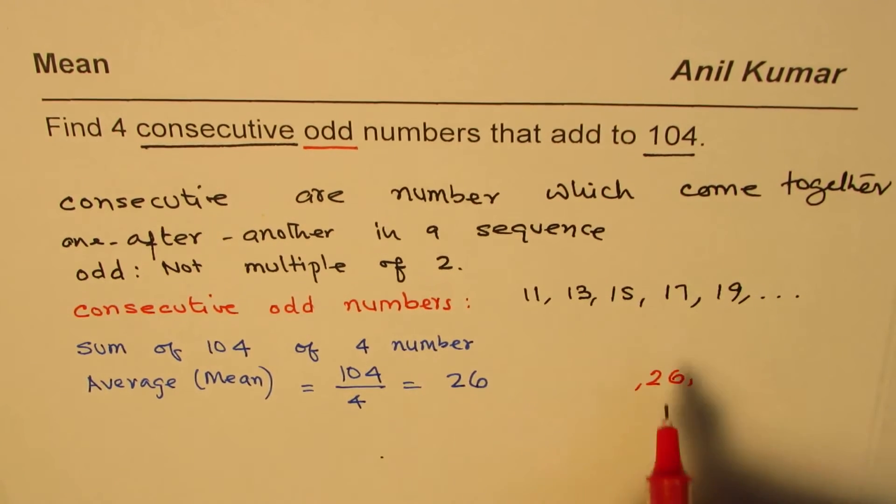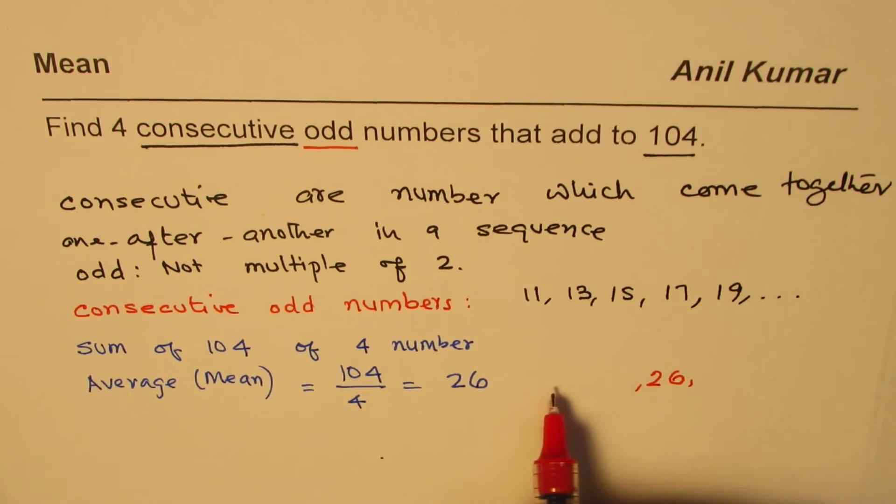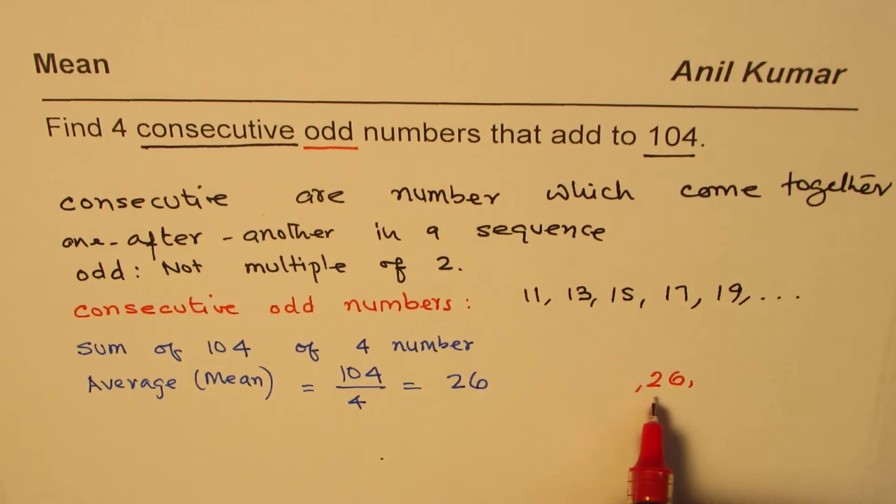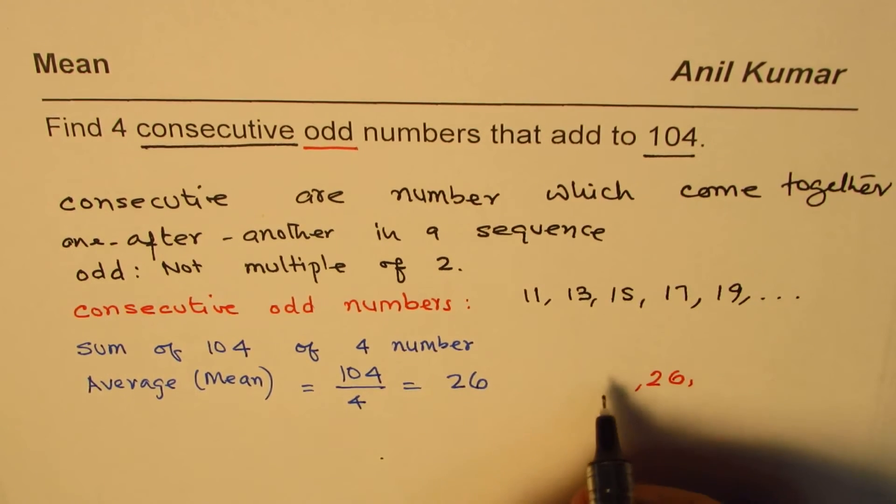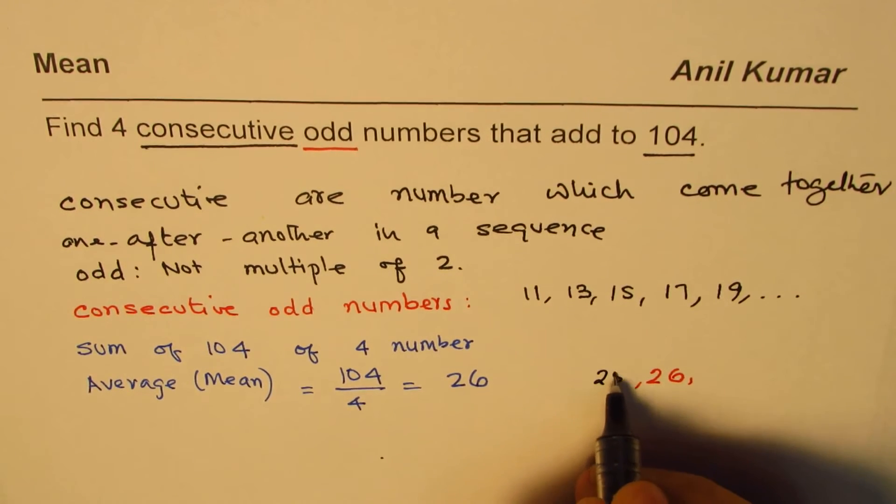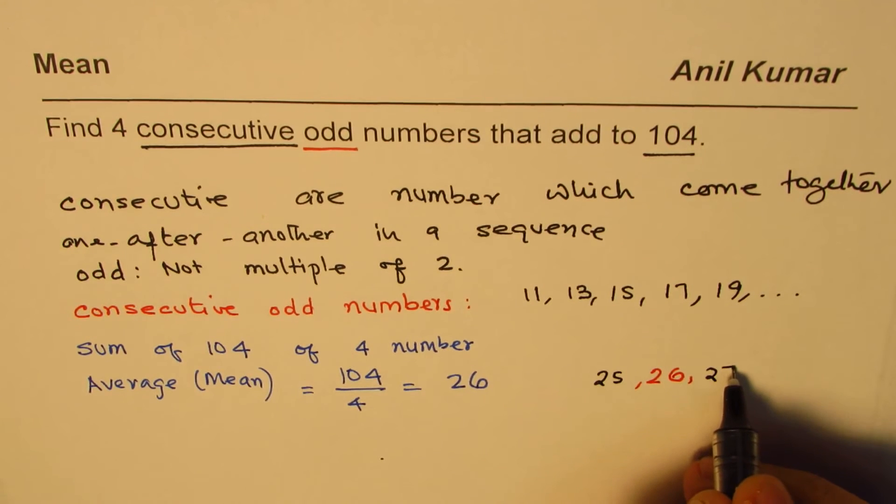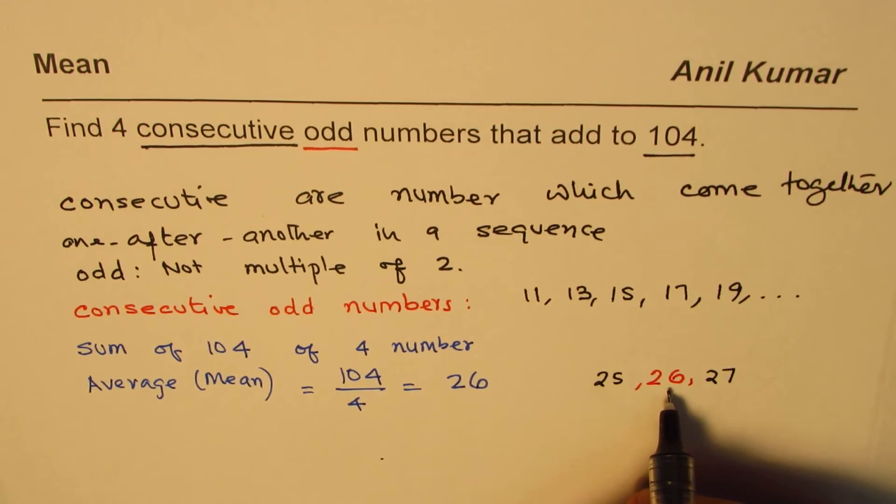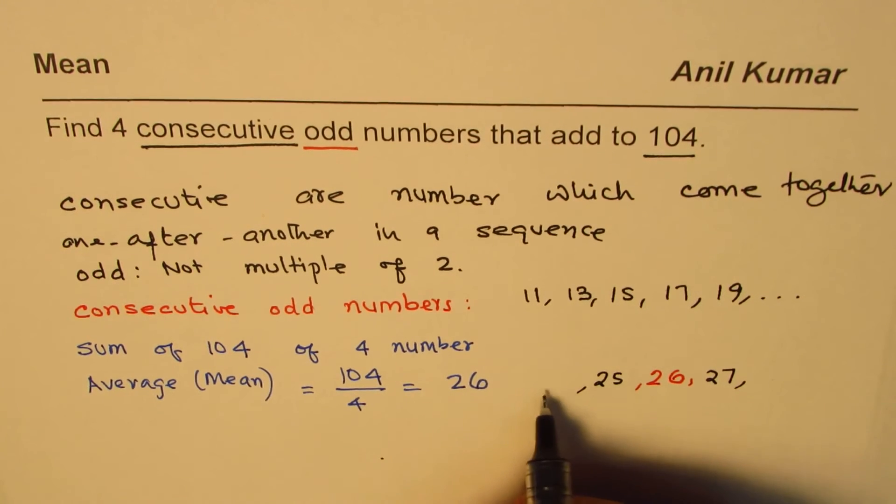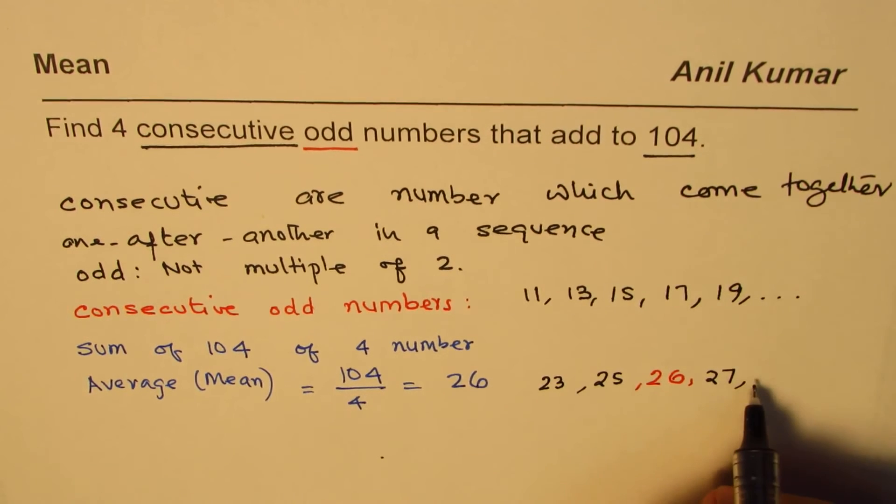Let's think about it. 26 is the average. Average may not be part of your solution. We are looking for consecutive odd numbers where average is 26. How about taking a number on either side? If I write 25 here and 27, still the average will be 26, but we get two odd consecutive numbers. Now can you give me more consecutive numbers? Yes, one less than this is 23, one more than this is 29.